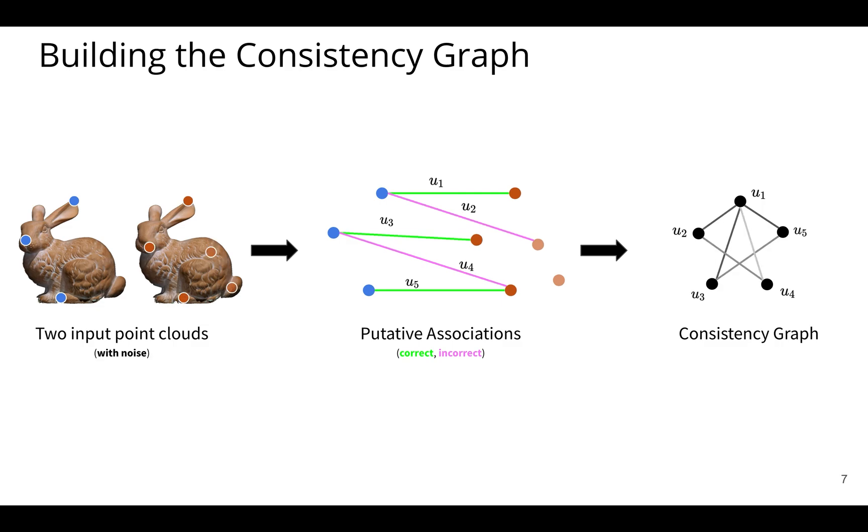So I showed you the case of perfect data. Now with noise, in this case, we see that a few of these orange points moved a little bit. Some of the associations now don't yield 100% consistency. And our graph looks like this, where the edges are shaded differently based on their consistency. And you'll notice that we added two edges also. So there's now an edge between U1 and U2 and U1 and U4.